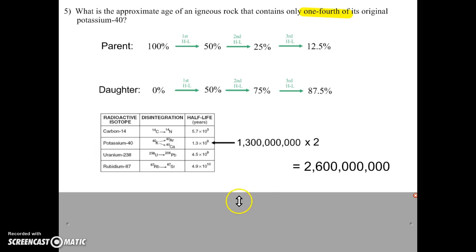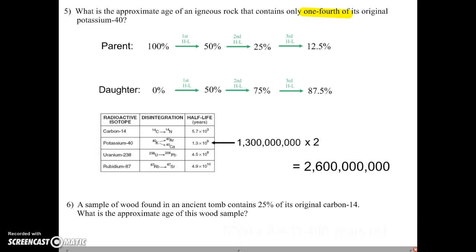And for the last practice question, a sample of wood found in an ancient tomb contains 25% of its original carbon-14. What is the approximate age of this wood sample? Okay, so it has 25%. So I come back up to this chart. So 25% again. That's two half-lives. Well, I know for carbon-14, each half-life is 5,700 years. If there have been two half-lives, it means this piece of wood is 11,400 years old.